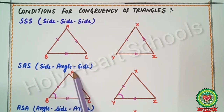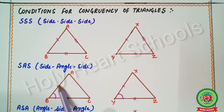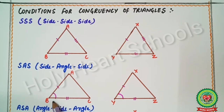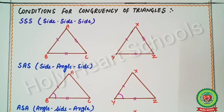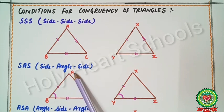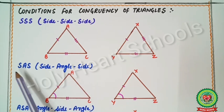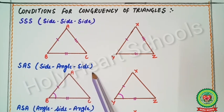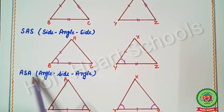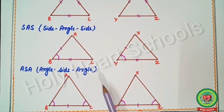Next is SAS — Side Angle Side. In triangle ABC and triangle XYZ, if AB = XY (side), angle B = angle Y (angle), and BC = YZ (side), then we take side, then angle, then side. This test is called SAS, that is Side Angle Side.